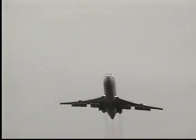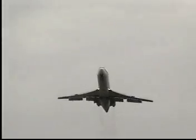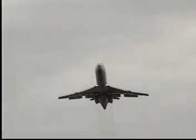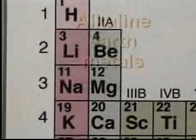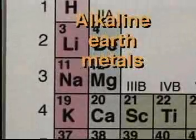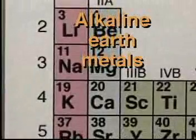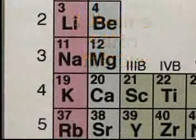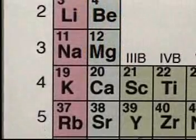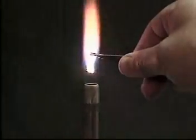Magnesium, a metal commonly used to make airplanes, is in a specific family of metals called the alkaline earth metals, highlighted in blue on the periodic table. The alkaline earth metals are a highly reactive group — for example, magnesium seen here brightly reacts when burned.